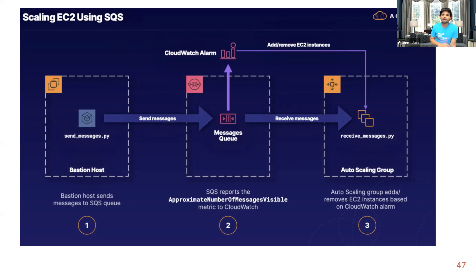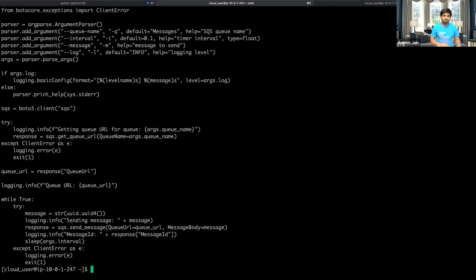Once the queue gets filled up — meaning once the queue size goes above 500 — it triggers an alarm on AWS. On the left is the producer, and on the right is the consumer, which reads the messages. If messages are produced faster than the consumer can read them, it needs more power. That's where auto scaling kicks in. As soon as SQS messages queue up beyond 500, a CloudWatch alarm triggers the auto scaling group to add capacity.